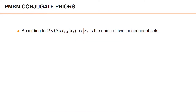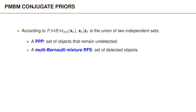Let us look closer at the PMBM conjugate prior. According to the PMBM posterior, the set of objects at time k is the union of two independent sets. The first set is a Poisson point process that represents all objects present in the scene that have not yet been detected. The second set is a multi-Bernoulli mixture that represents the set of detected objects. The main challenge in extended object tracking is to handle this part of the posterior, since this is where we make use of the measurements.